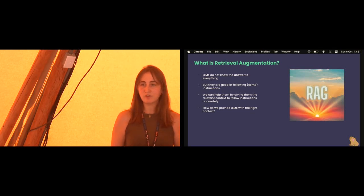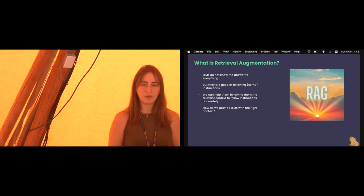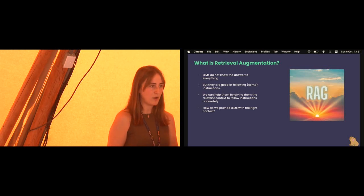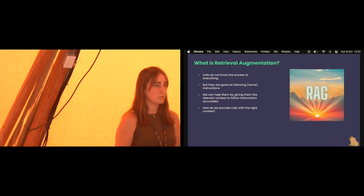The idea behind retrieval augmentation: there is no world where AI sees the entire world and is an all-knowing entity that can answer any question. When we talk about retrieval augmented generation — RAG — large language models don't know everything, but they are quite good at following instructions. RAG is a hack, a trick, to take advantage of the fact that LLMs can follow instructions quite well, allowing them to give responses about data they might not know — personal data, company data, anything not present during training.